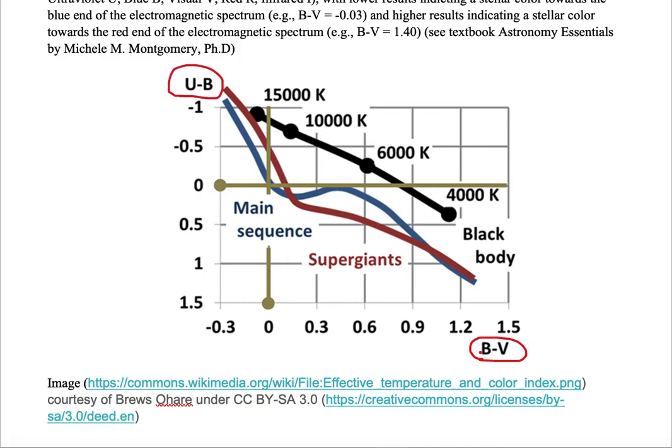If B minus V is a low value, such as negative 0.3, the object is going to appear more blue. But if B minus V is a high number, then it's going to look more red.